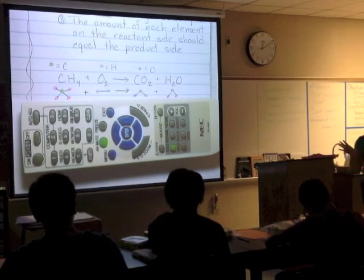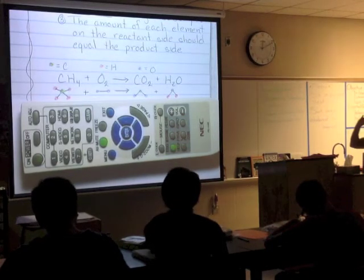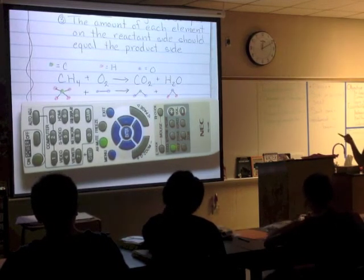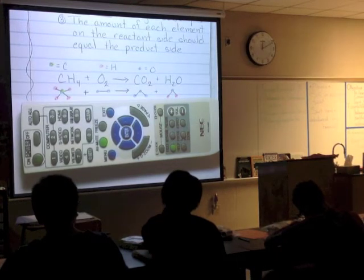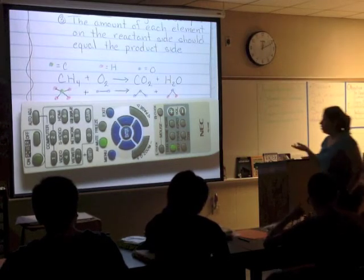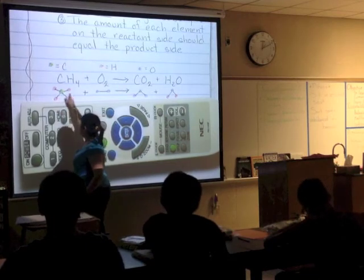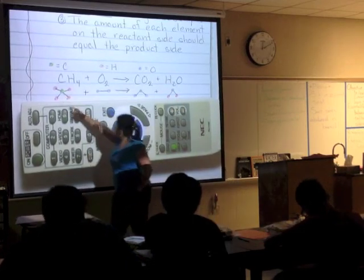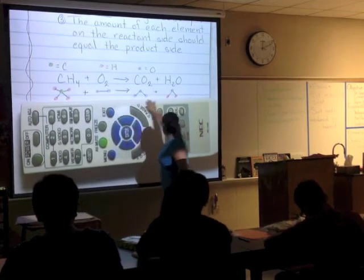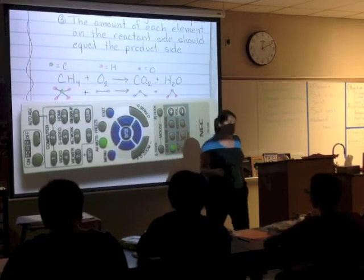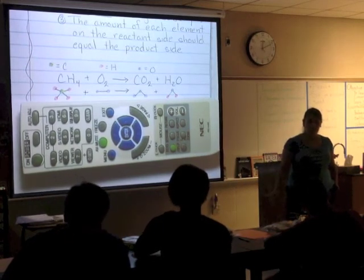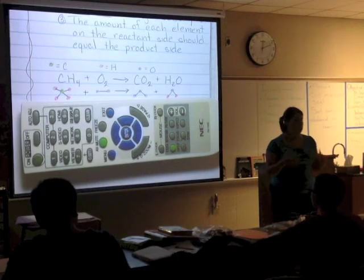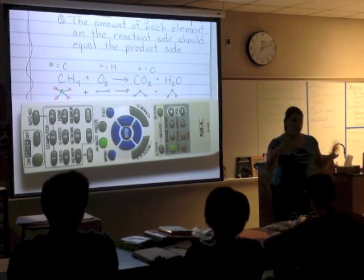Now, we already said this is not balanced because you have two oxygens on the reactant side and three oxygens on the product side. But now when you look at it in pictures, isn't that easier to see? I can very quickly see I have four reds over here and only two over here — that's not equal. I have one green and one green — that's okay. I have two purples and three purples — that's not okay. When you do it with pictures, it's easy to tell it's not balanced at all.